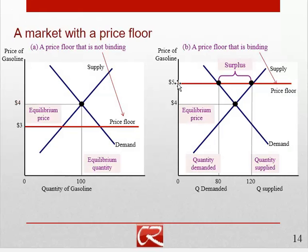In particular, what's going to happen is it's going to change the quantity demanded, because we've changed the price from $4 to $5. So quantity demanded is where that price floor hits the demand curve — quantity demanded falls. Some people who were willing and able to pay the equilibrium price of $4 are not willing and able to pay the price floor price of $5.